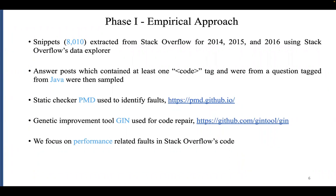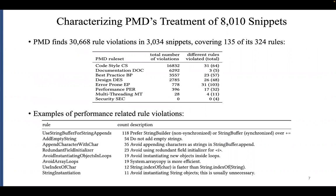PMD can identify a very broad range of issues. Our focus here was on performance because, to the best of our knowledge, this hasn't really been done before — at least a focus on performance — and also because I'm quite interested in performance optimization. Starting with these original 8,000 snippets, PMD uncovered about 30,000 violations in about 3,000 of these snippets. PMD comes with about 300 rules for Java, and about one third of these rules appear to be violated at least once.